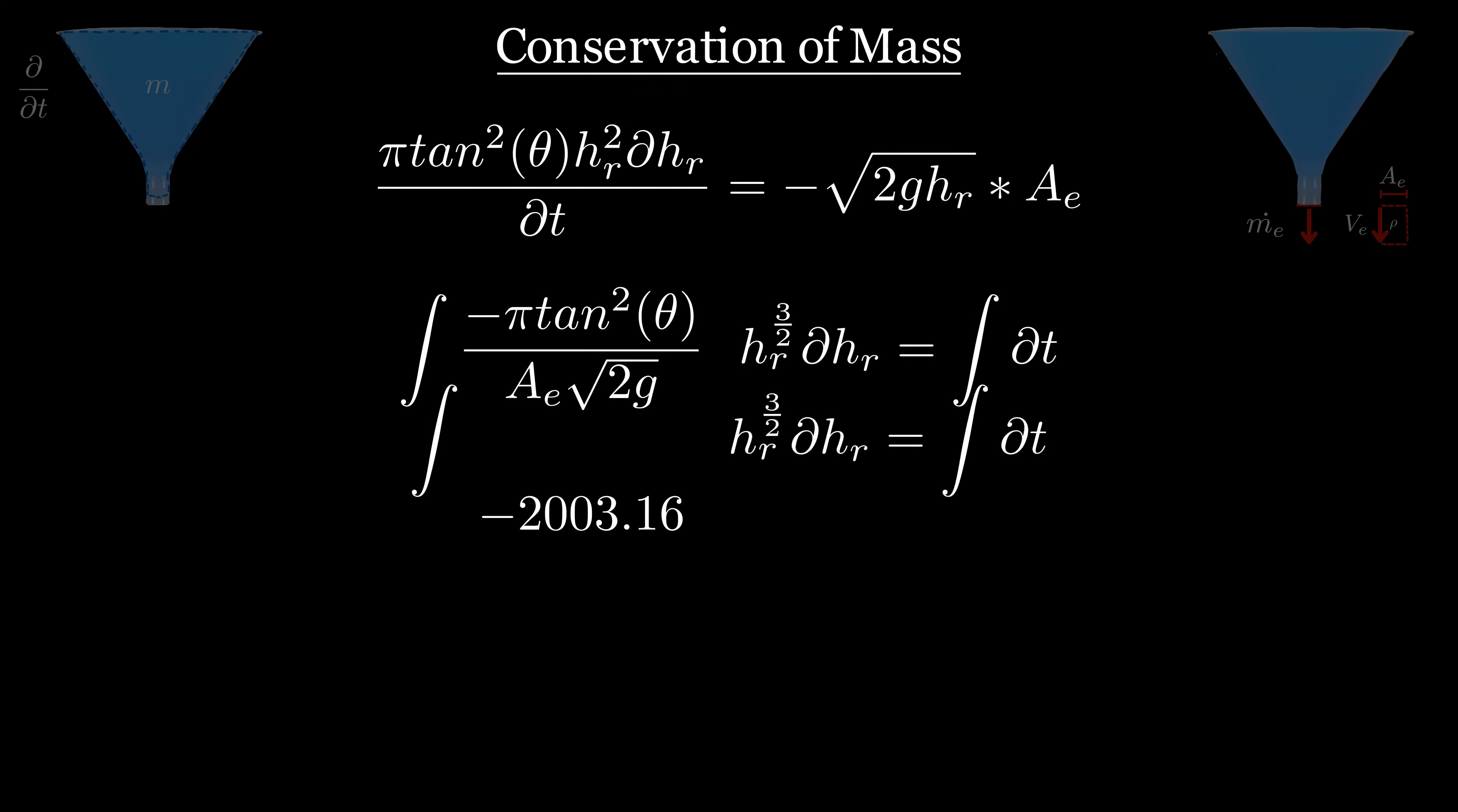I'll plug in all the constants now to hopefully make things look less overwhelming. For the height we'll integrate from the initial height of the reservoir to zero when the funnel is empty, and for the time we'll integrate from start time zero to the final drain time, which we're solving for.